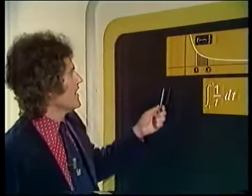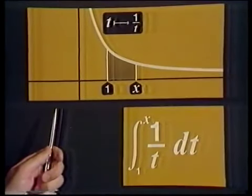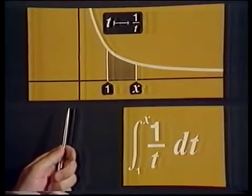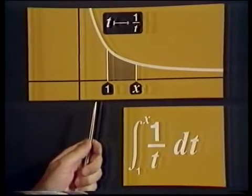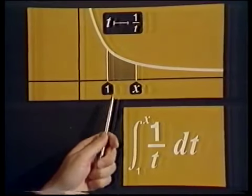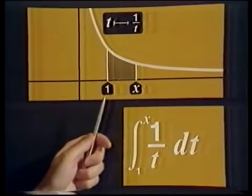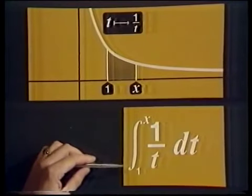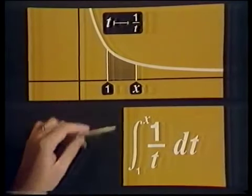This is the last program of block 3, and in it we're going to look at two functions: the logarithm function and the exponential function. Let's begin where you first met the logarithm function. It's the graph of t maps to 1 upon t. Alan Solomon looked at this in a block 2 program — he worked out the area between 1 and 2 under this curve. What we're going to do is be more general: we're going to look at the area from 1 to x, which we can write as the integral from 1 to x of 1 over t dt.